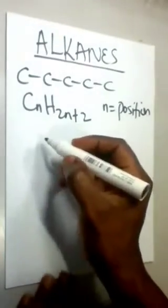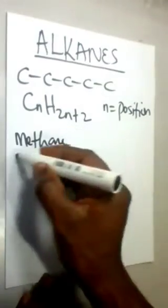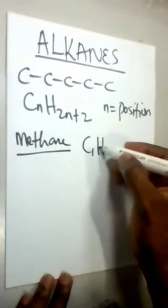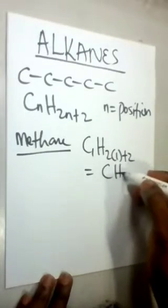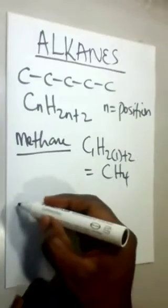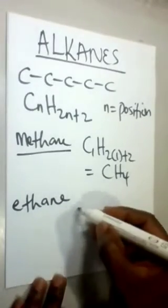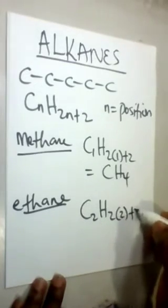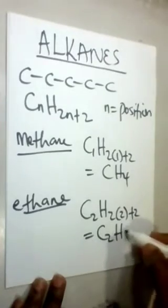The first alkane is methane, also known as the simplest alkane. It is C1H2(1)+2, which gives us CH4. The next simple alkane is ethane. This is C2H2(2)+2, which gives us C2H6.